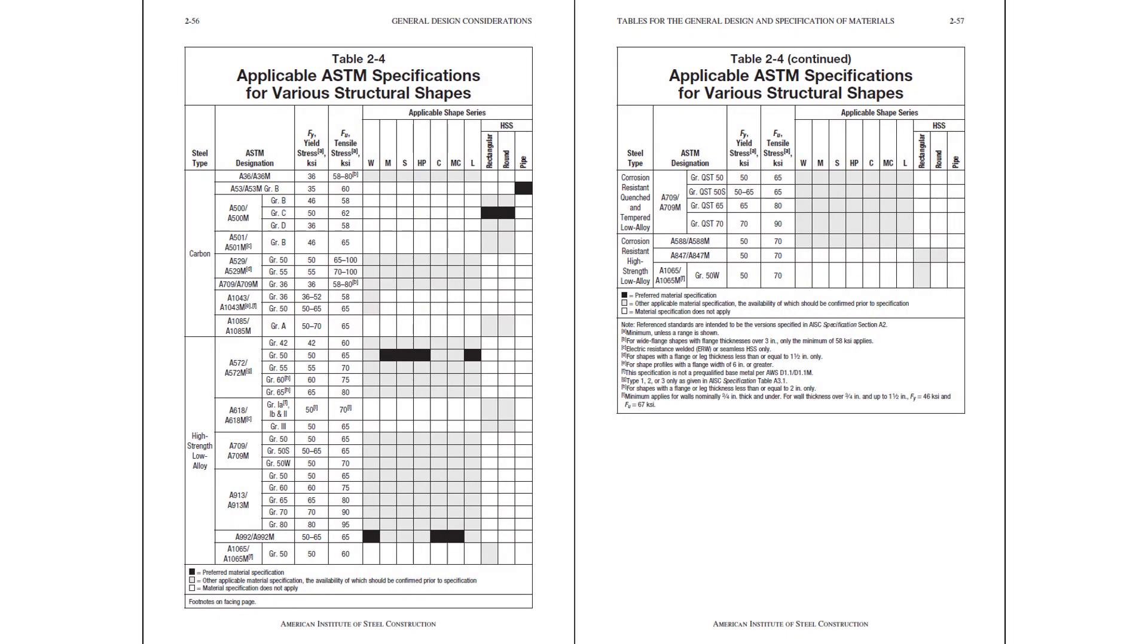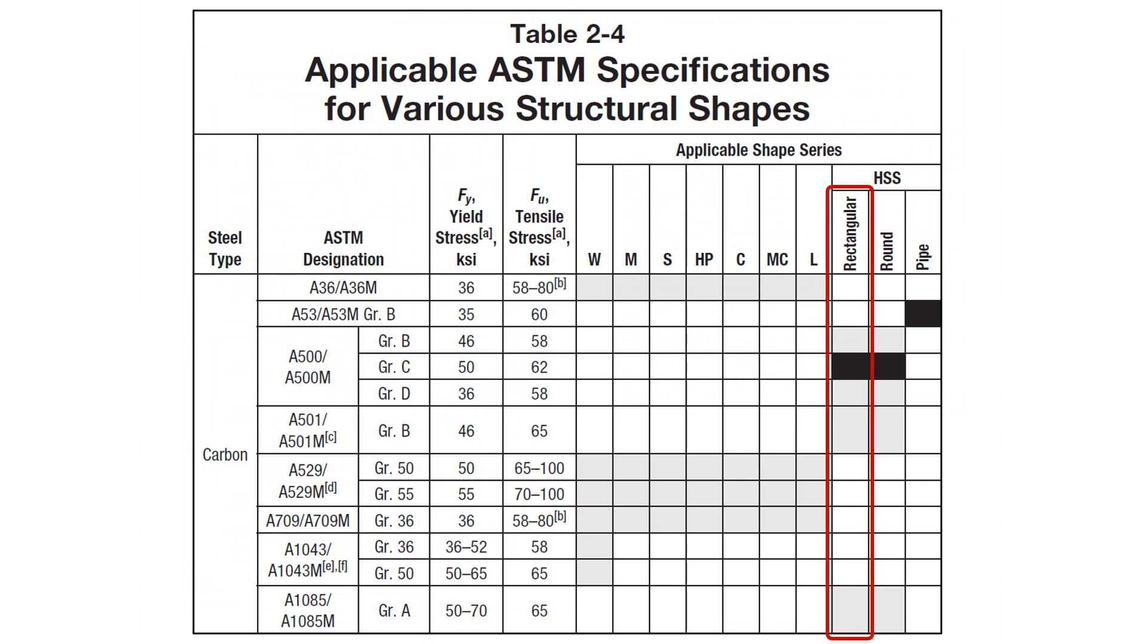We'll go to table 2-4 of the AISC steel construction manual to determine the yield strength of the member. Zooming in a little bit, you can see that for a rectangular HSS, A500 grade C is a preferred material, and the yield stress is 50 KSI and the tensile stress is 62 KSI. Also note, however, that these members are available in A1085 material as well, where the yield stress would be 50 KSI, but the tensile stress would be 65 KSI. Anyways, for this example, we use F sub y equal 50 KSI and F sub u equal 62 KSI.